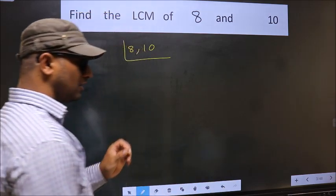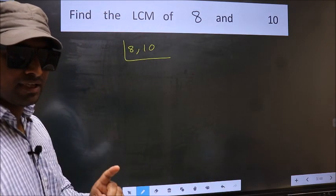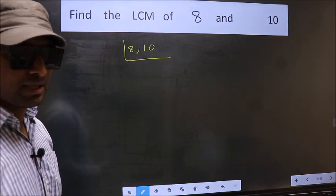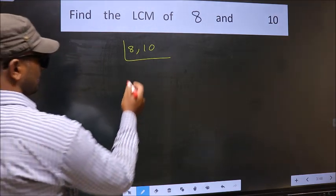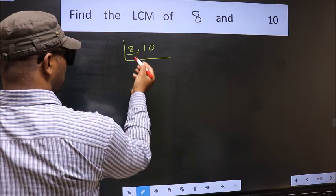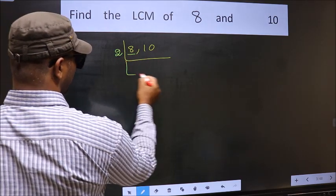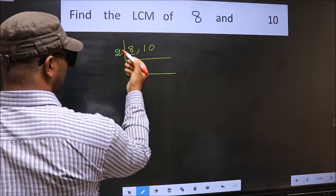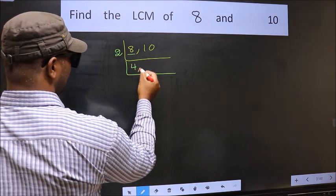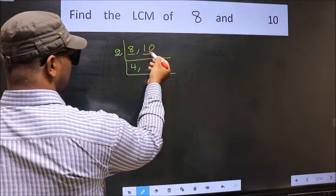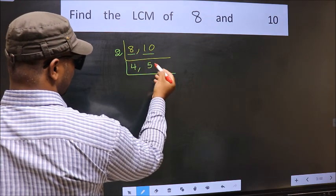This is your step 1. Now, you should focus on the first number which is 8 here. 8 is an even number so take 2. When do we get 8 in the 2 table? 2 times 4 is 8. Now, the other number 10. When do we get 10 in the 2 table? 2 times 5 is 10.